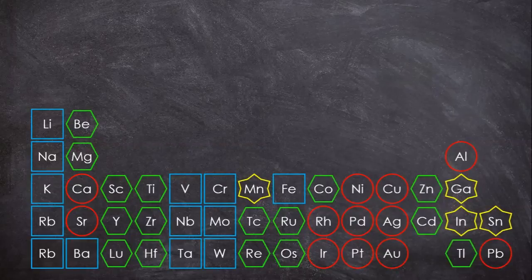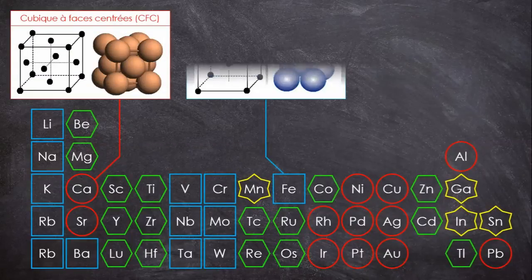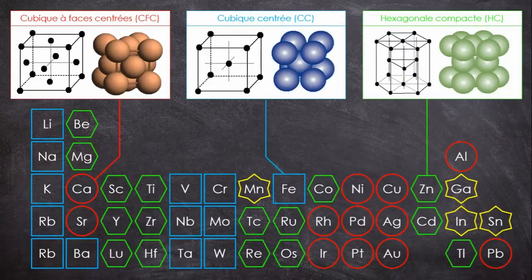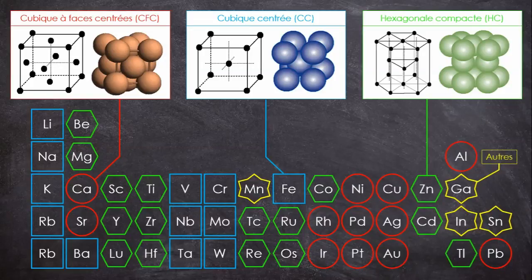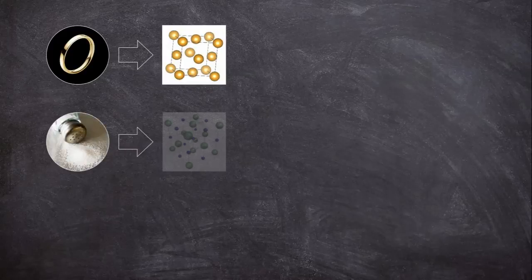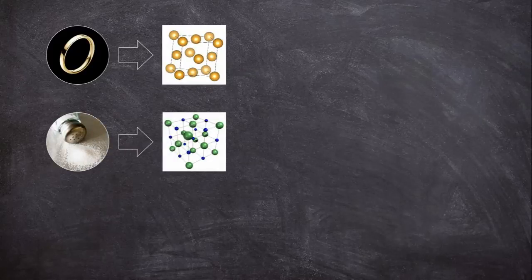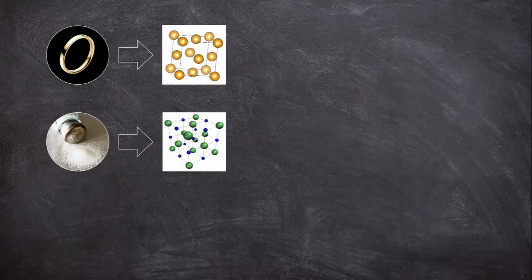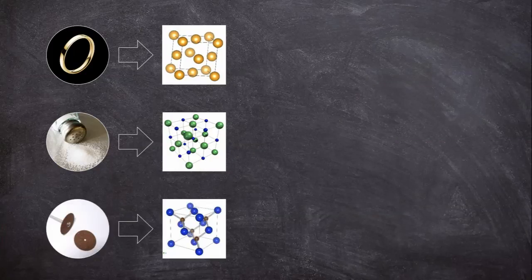Mais revenons à nos mailles. Il en existe plusieurs types, mais les plus courantes sont les mailles cubiques à face centrée, cubiques centrées et hexagonales, mais il en existe plein d'autres. L'or, par exemple, a une structure cubique face centrée, tout comme le sel de table de tout à l'heure, qui se présente sous cette forme. On est loin de la molécule NaCl. Et le carbure de silicium aussi peut avoir cette structure.